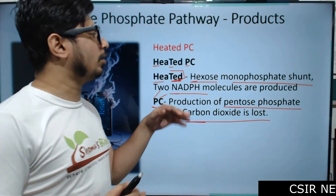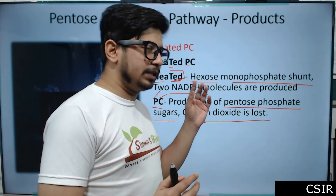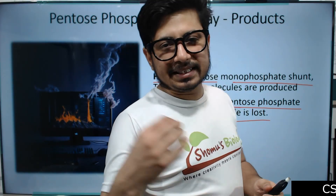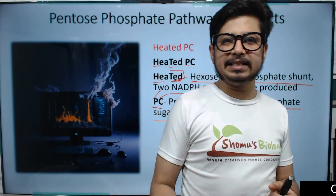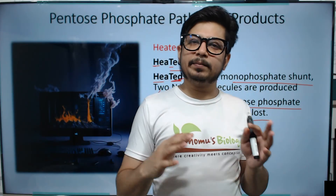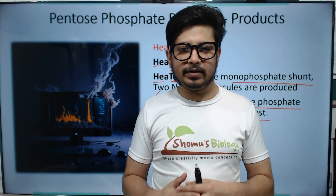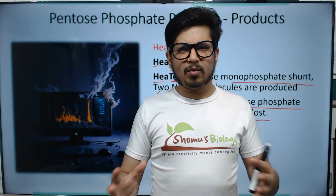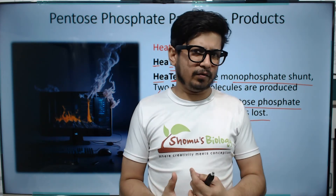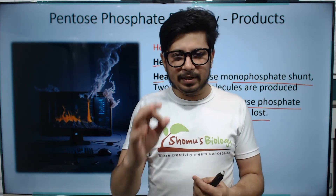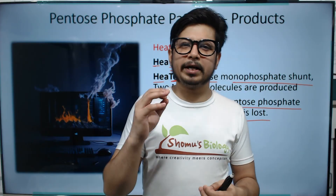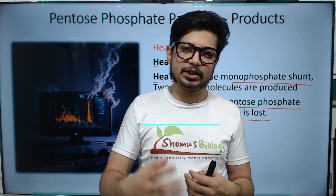These are the components going in and out of the pentose phosphate pathway. That's how easy it is to remember the enzymes involved and what the pathway does to the cell as an overview. I believe you now have a clear understanding of the pentose phosphate pathway, also known as the hexose monophosphate shunt.